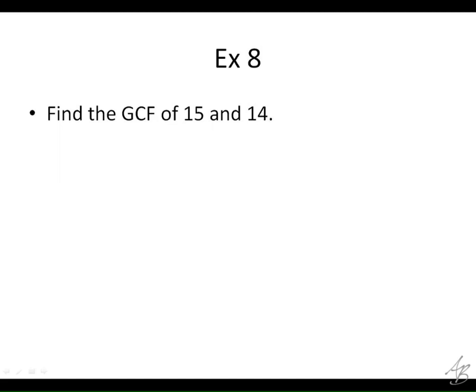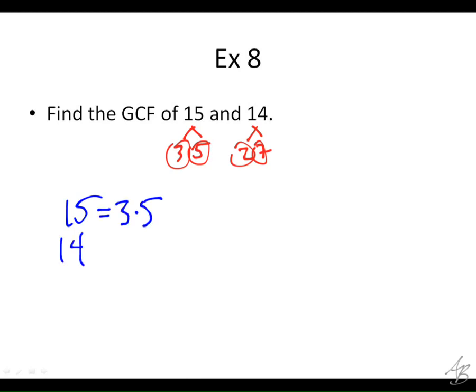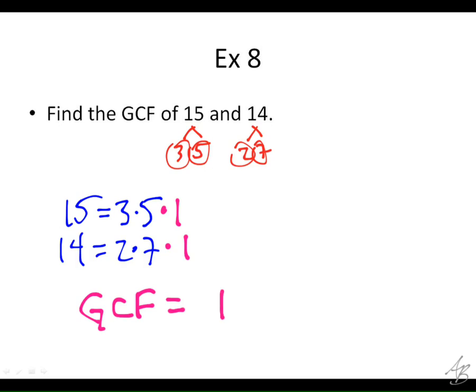This one looks easy, doesn't it? So we're going to start by doing a prime factorization. We've got 3 times 5 for 15, and 2 times 7 for 14. So 15 equals 3 times 5, and 14 equals 2 times 7. What do they have in common? Nothing. Is the GCF 0? No — it's 1. They do have 1 in common. We need to remember that when they don't seem to share anything, it's the same as 3 times 5 times 1 and 2 times 7 times 1. They always have a 1 in common, so if there is nothing else in common, the GCF is 1.